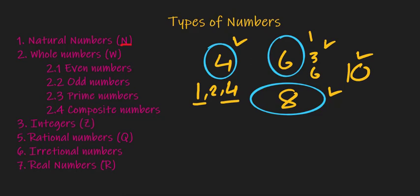So integers include 1, minus 1, 2, minus 2 — these are actually integers. I would also mention that 0 is also a part of integers.